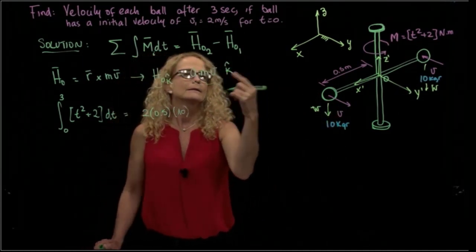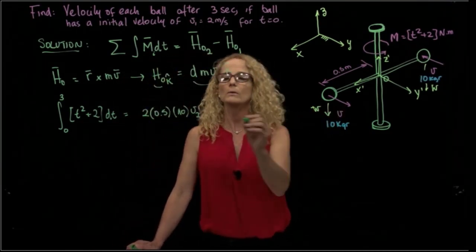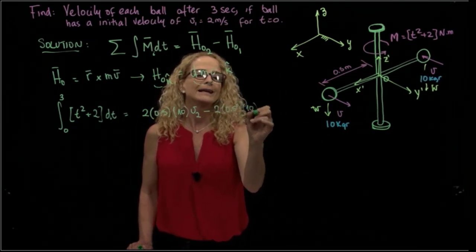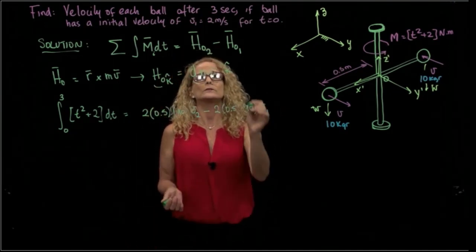which we are given, that is 10, times the velocity in the final position of those balls minus 2 times 0.5 times 10 times the initial velocity. And the initial velocity is given.